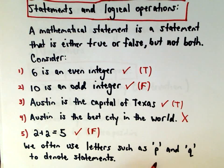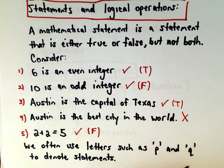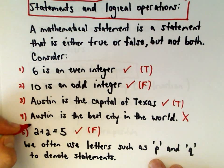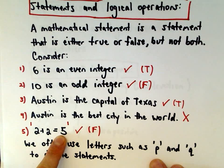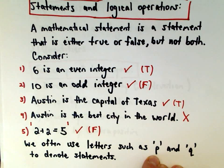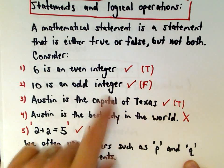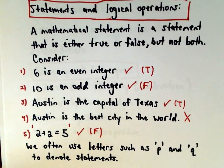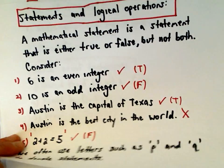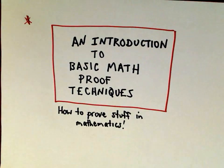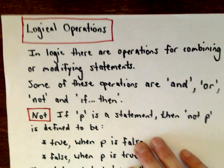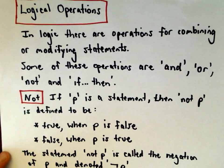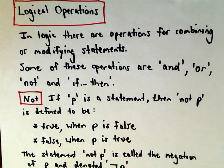You'll often see Ps and Qs used to denote statements — it's kind of like X and Y in algebra. For example, the letter P could denote the statement '2 plus 2 equals 5,' and Q could denote '10 is an odd integer.' Just like there are mathematical operations — add, subtract, multiply, divide — there are also what are known as logical operations, which are ways to combine or modify statements.